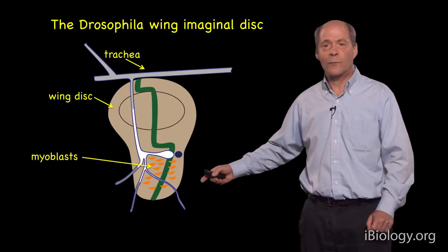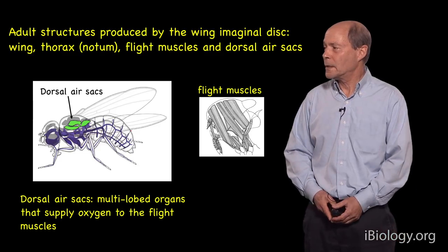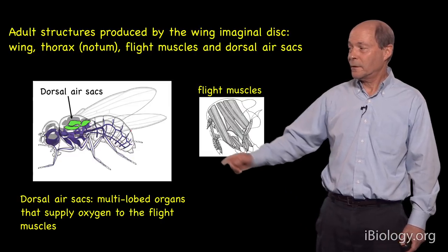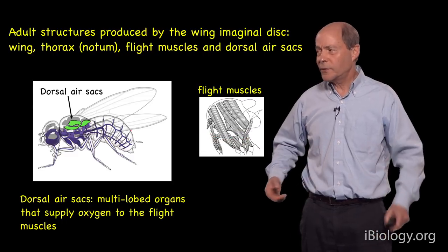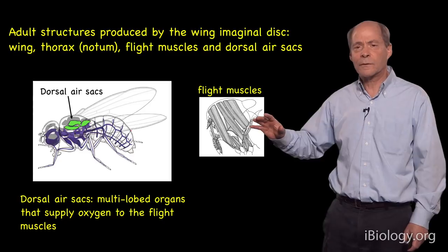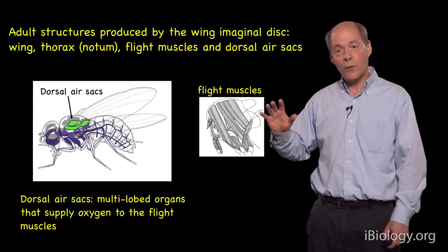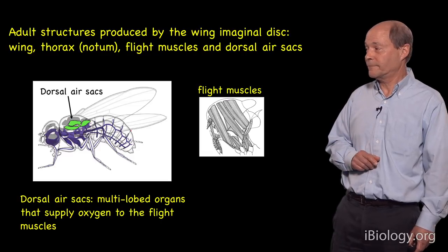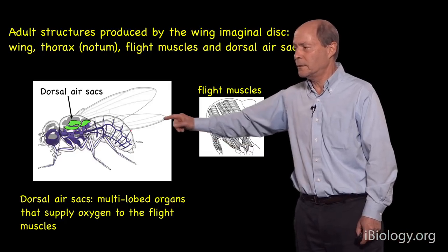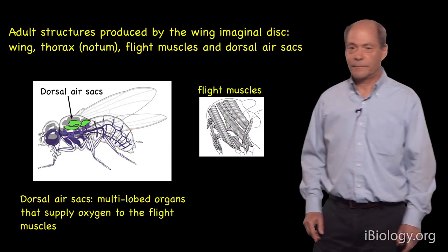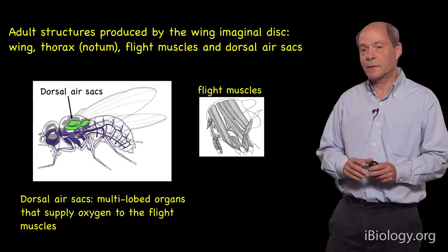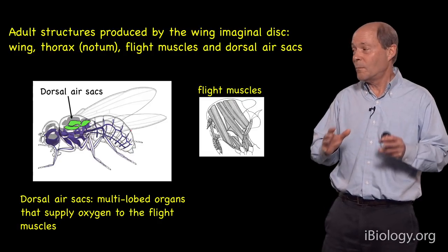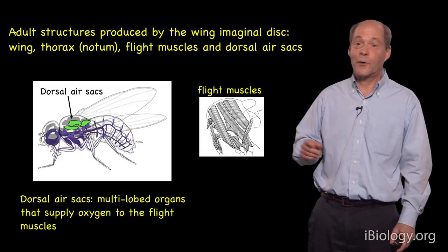The orange orbs here represent myoblasts — muscle precursor cells. The adult structures produced by the wing imaginal disc include the wings, the thoracic cuticle (most of the dorsal thoracic cuticle, which we call the notum), the flight muscles produced by those myoblasts that associate with the wing disc, and what are called the dorsal air sacs — derivatives produced by the tracheal cells that associate with the wing imaginal disc, and the major tracheal organ of the adult fly.